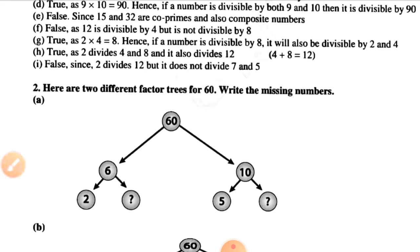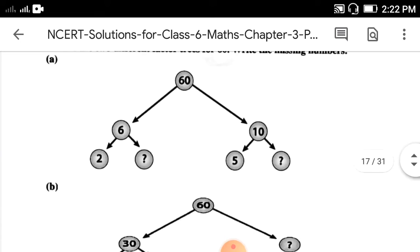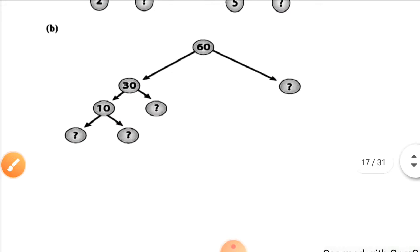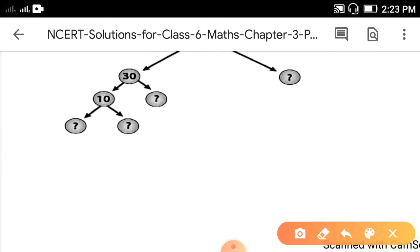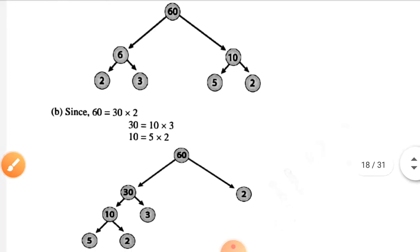Question number 2: here are two different factor trees for 60 — write the missing numbers. For the first tree, 60 is a multiplication of 10 and 6. Then 6 is 2 times 3, and 10 is 5 times 2. For the second tree, 60 is split using 30 and 2; 30 factors into 10 and 3, and 10 is 2 times 5. You can check the answers.